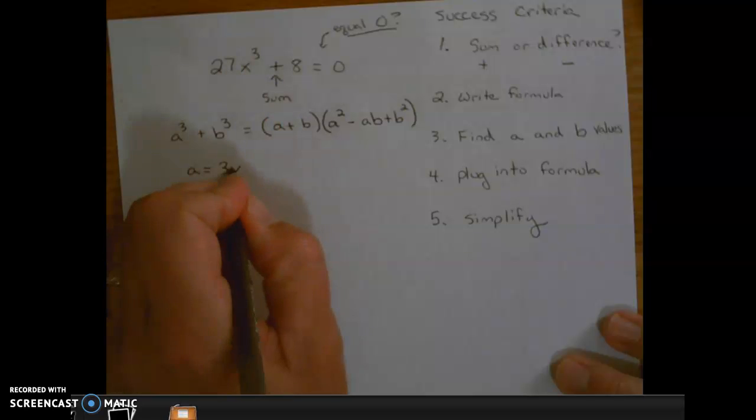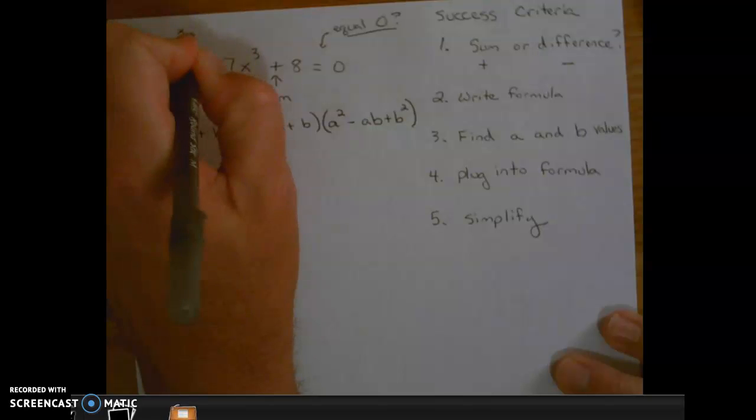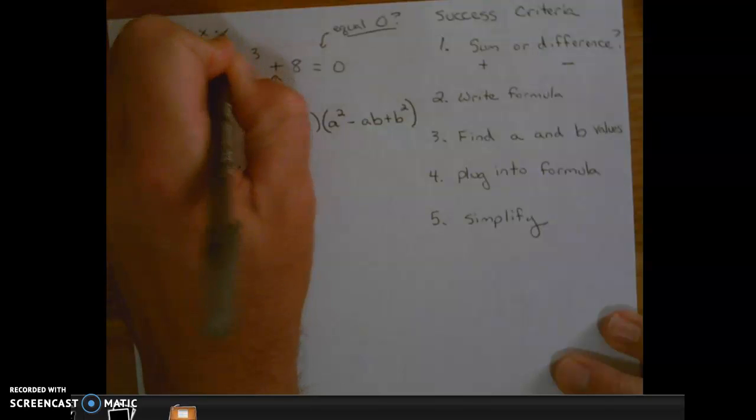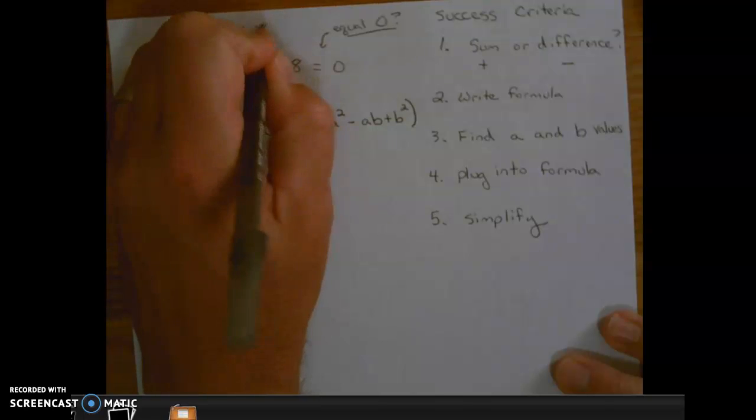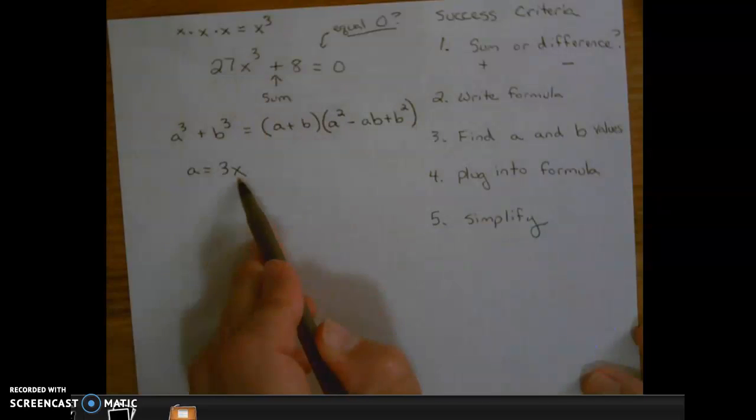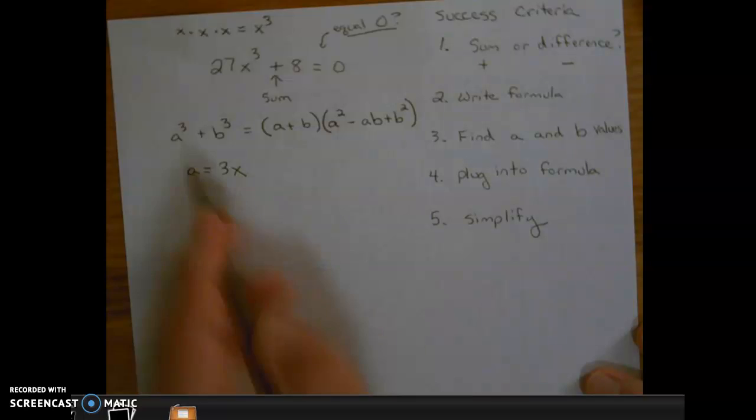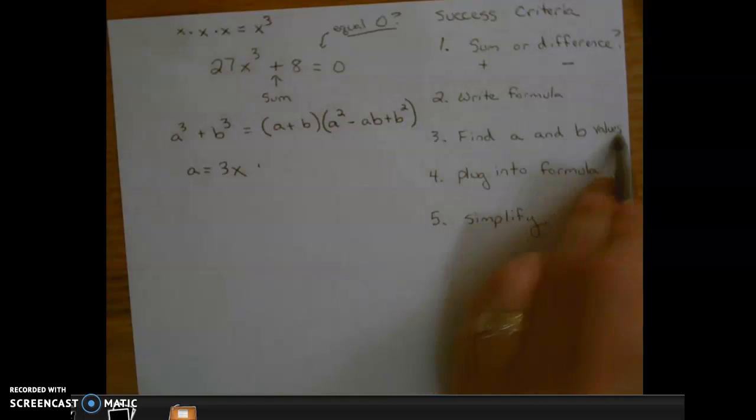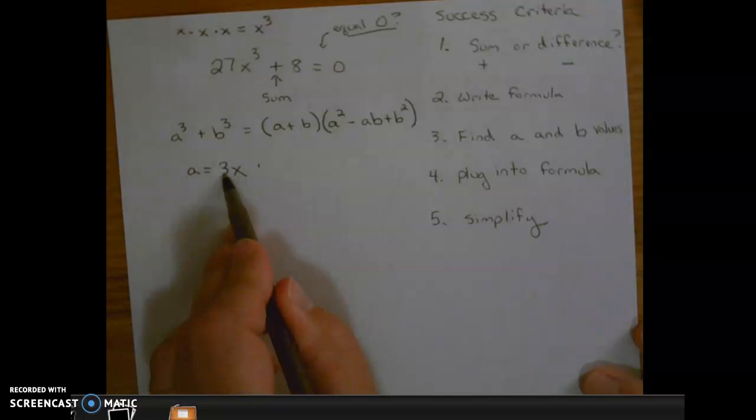Well, x does because x × x × x equals x³. So when you see an x³, it's always going to be x. We're going to write a and b values. So we have our a value here is 3x.